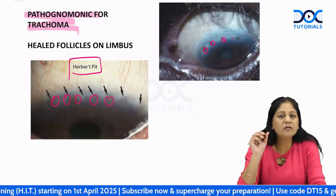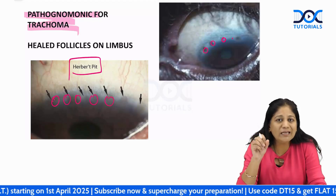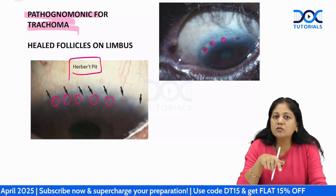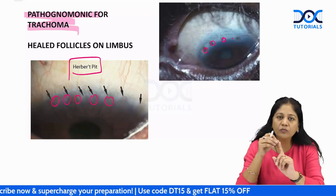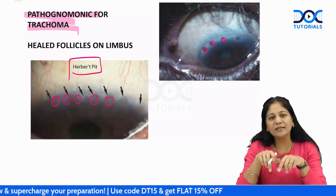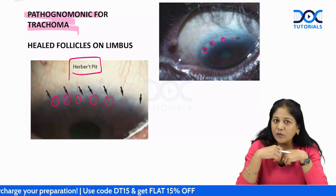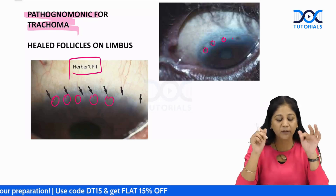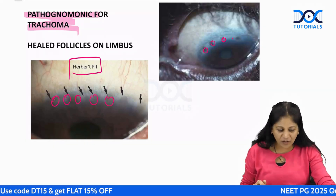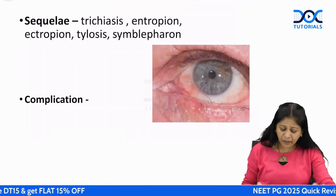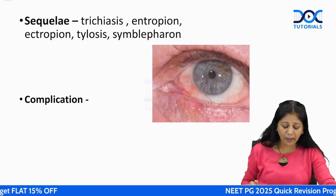Herbert pits are a pathognomonic finding in trachoma. If you see Herbert pits, the diagnosis has to be trachoma. Follicles and papillae can be seen elsewhere, but Herbert pits cannot be seen in any other condition.